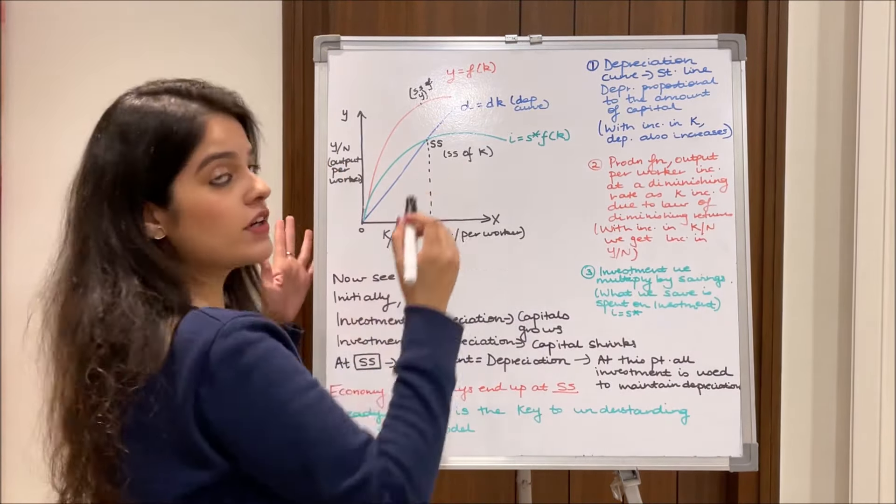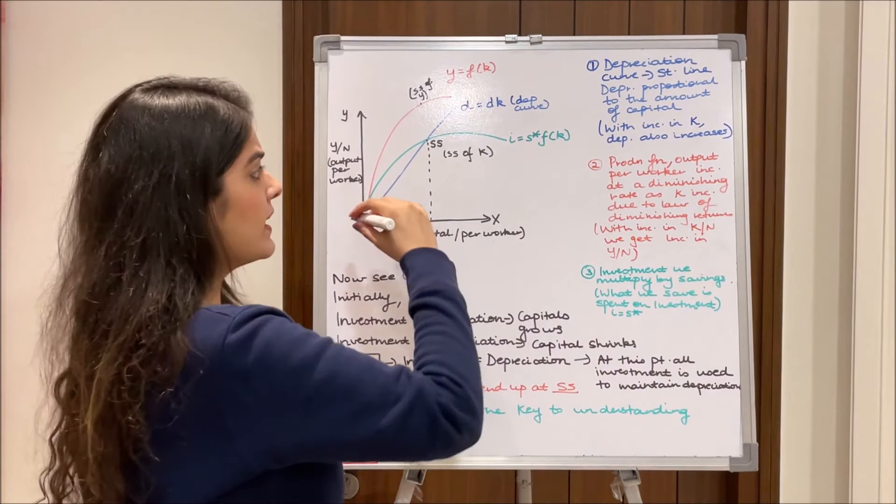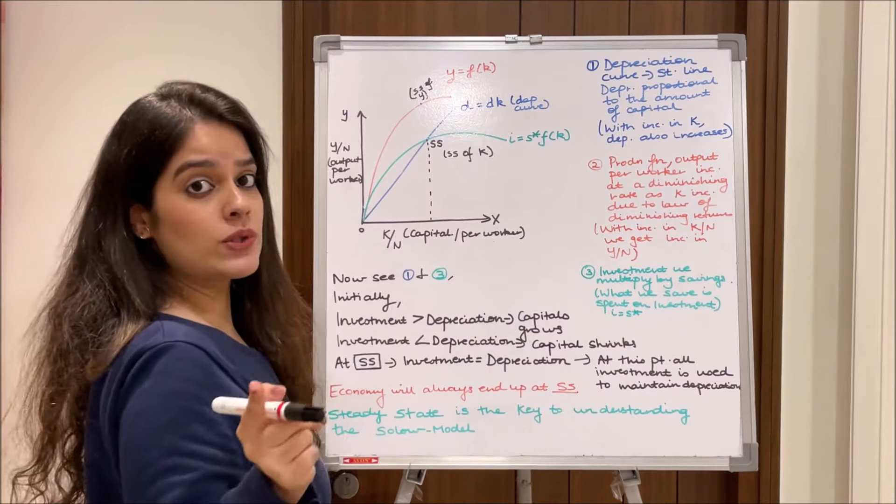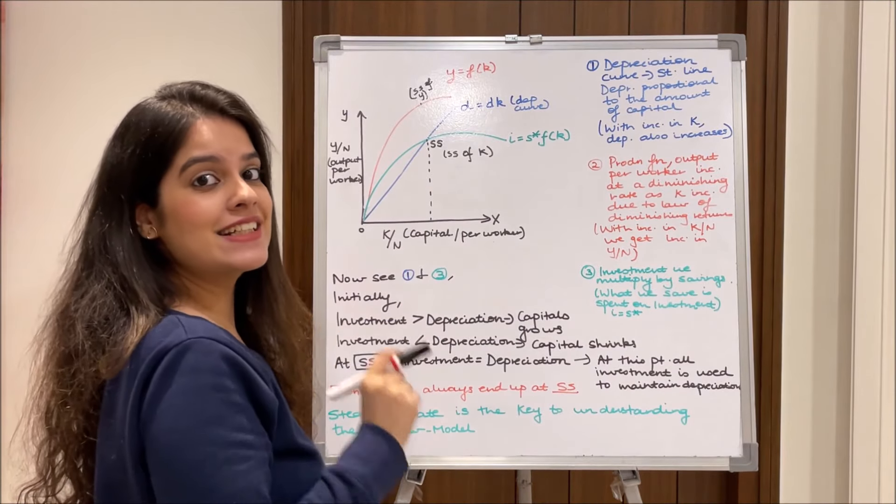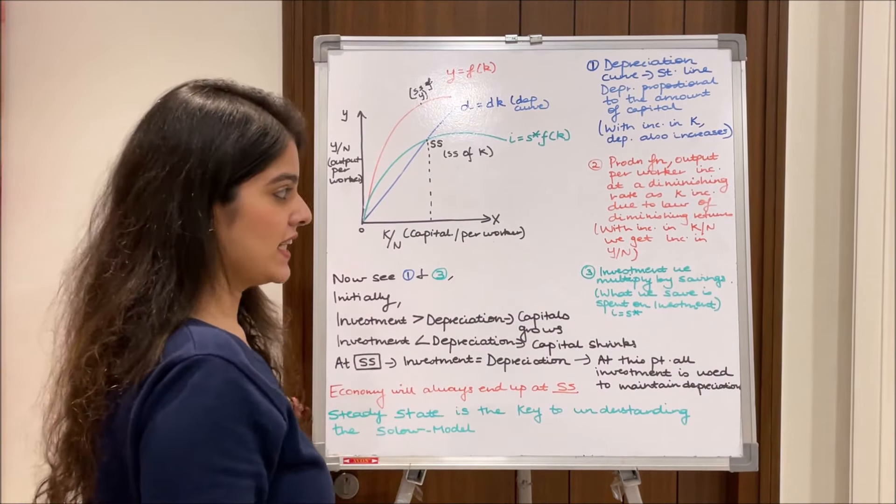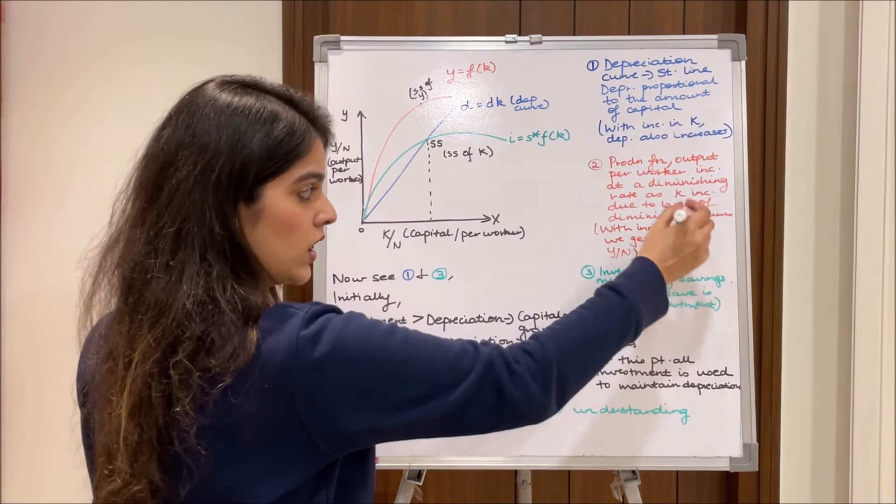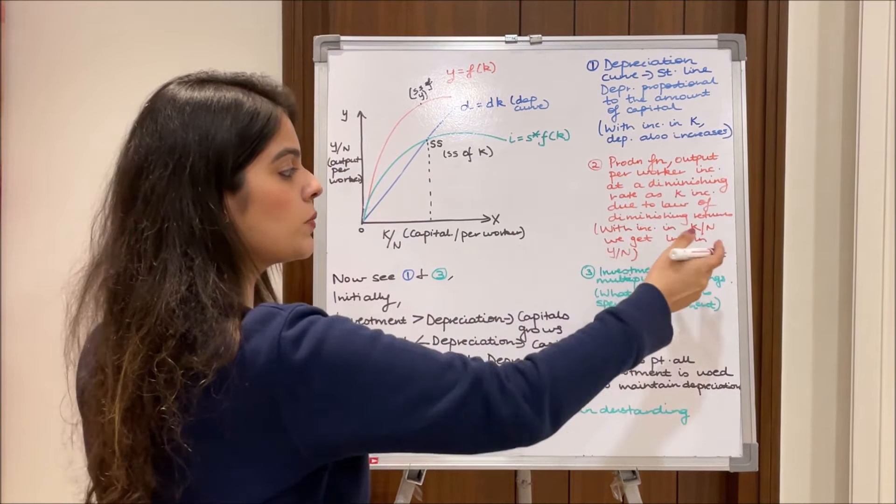So obviously from the shape of the curve you can very well make out that it is increasing, but because it is bending downwards we can clearly see that it is increasing at a diminishing rate. So it basically means with the increase in capital per worker we get increase in output per worker.